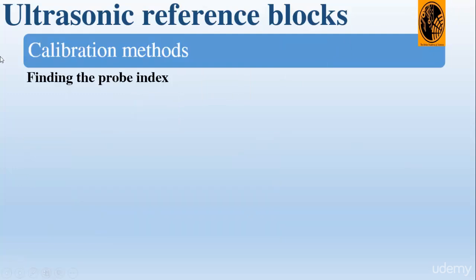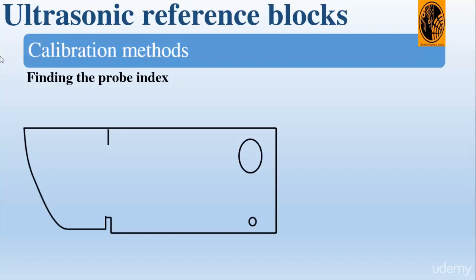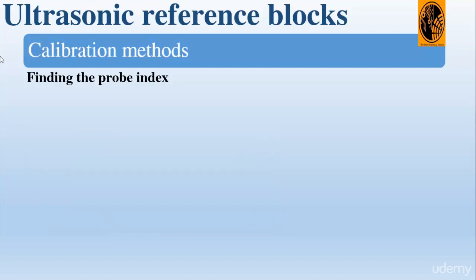First, let's start by finding the probe index. The point at which the center of the beam leaves the probe and enters the test material is called the probe index, or the emission point. It should be marked on each side of the probe and checked regularly. To find the probe index, as you can see on this animation, we place the probe on the V1 block.